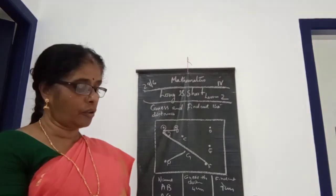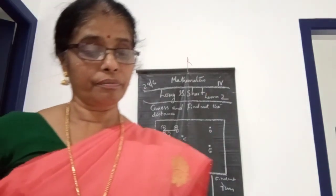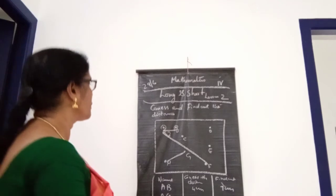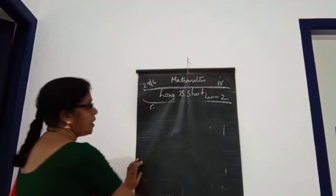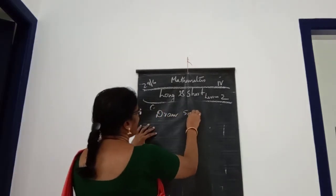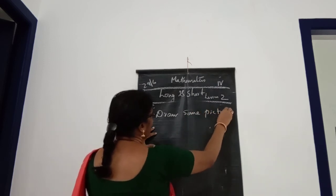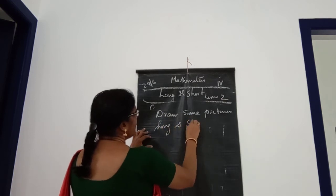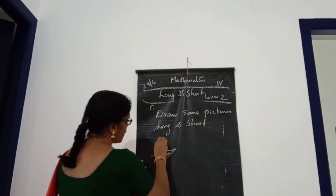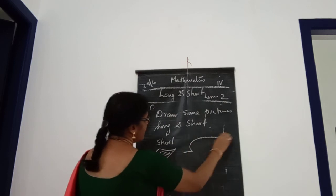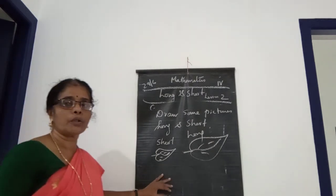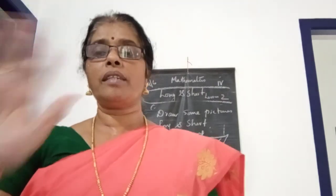That is homework children — you can find that out. Then next: draw some pictures of long and short — that is also homework. I will give you one example: this one is the short one and this one is the long one. You write it here and draw some more figures. That is your homework. Okay, bye children.